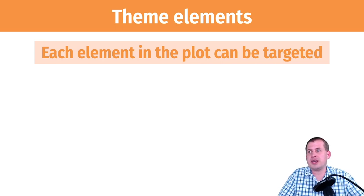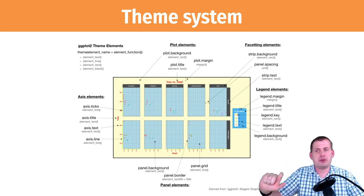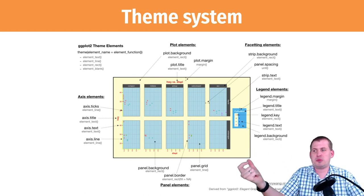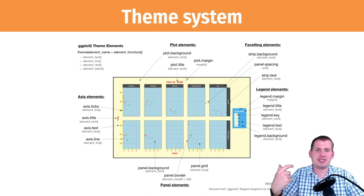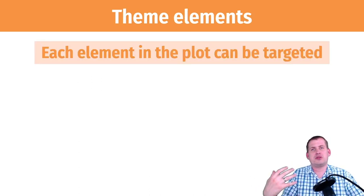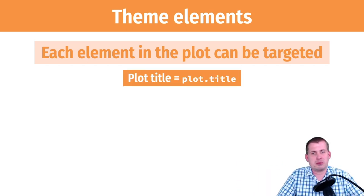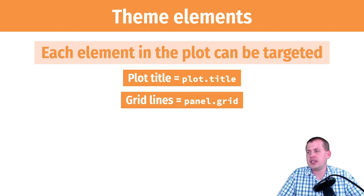Every element, anything you see in that plot, can be targeted somehow with one of these theme definitions like strip.background, axis.title, or axis.ticks. You get used to the core ones, the more popular ones that you deal with—like plot.title if you want to make that bold or slightly bigger or left aligned.